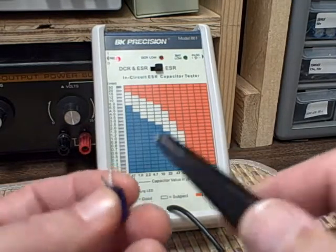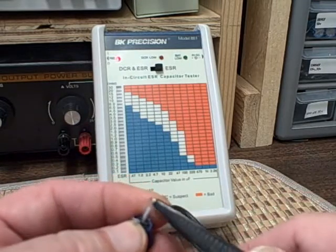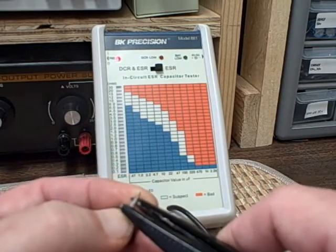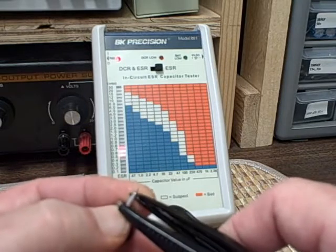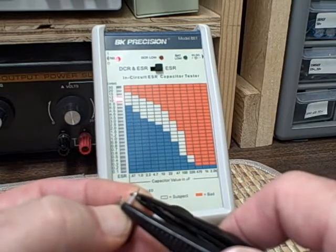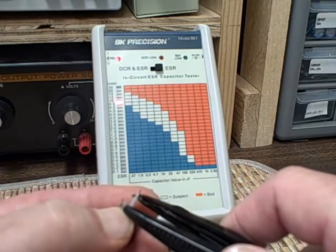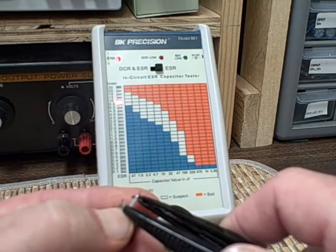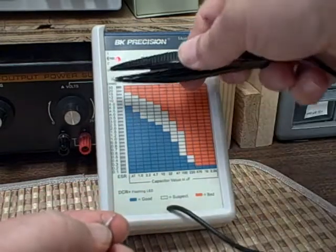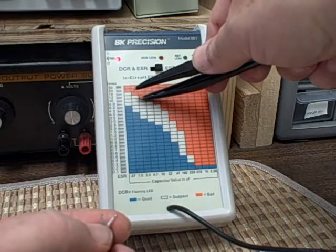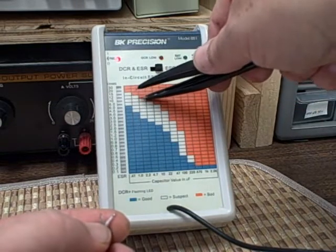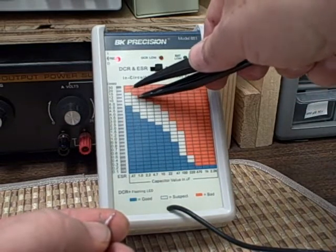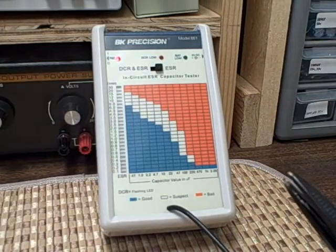Here's another 2.2, 450, reading about 10 ohms. 10 ohms up here, 2.2 is in that column, we are right against the bad, so I'm going to consider that definitely a bad one.